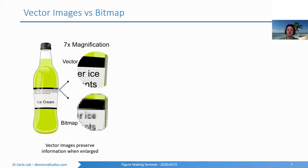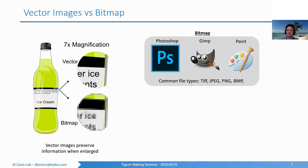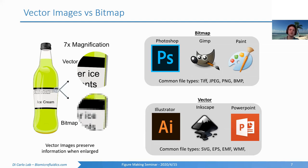Vector images are nice for making schematics and handling data because if you need to adjust anything, you'll always preserve quality and all the information. Bitmap software includes Photoshop, GIMP, and Paint — I usually won't use these for scientific figures. Vector graphics software includes Illustrator, Inkscape, and PowerPoint. Bitmap formats include TIFF, JPEG, PNG, and BMP — you'll use these for actual images, which always have to be bitmaps. But for plots and illustrations, vector formats definitely help preserve quality.